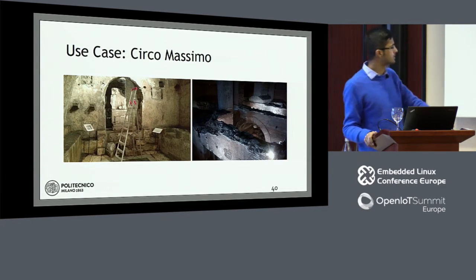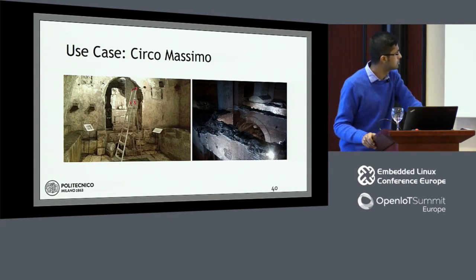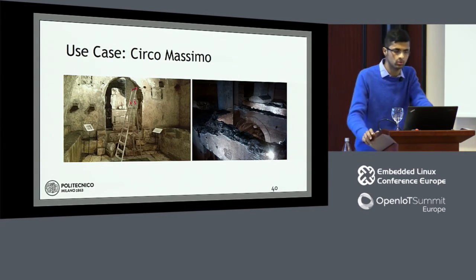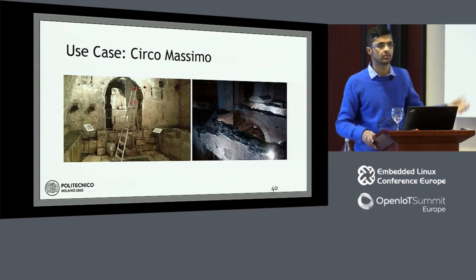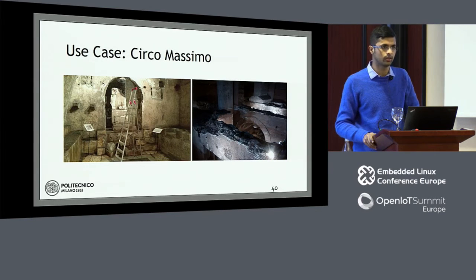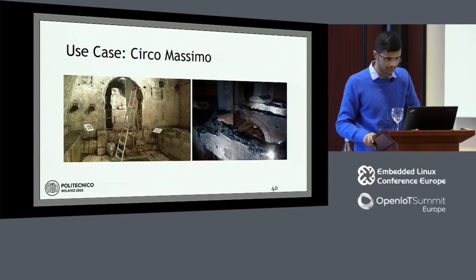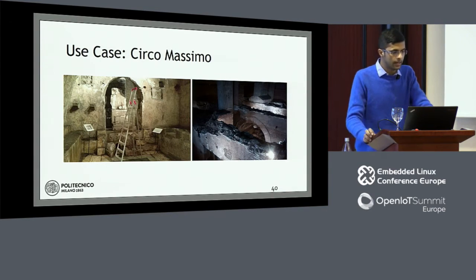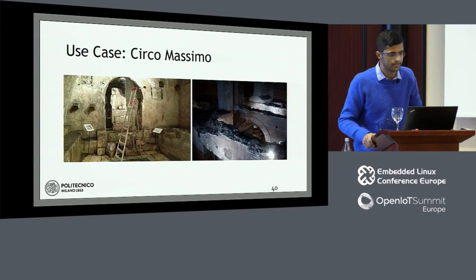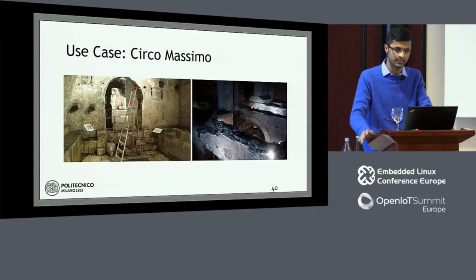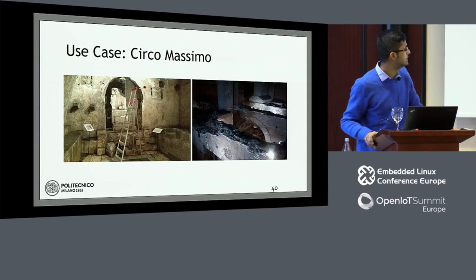Third, the place is completely unmanned through most of the week. If something goes wrong, we had no one to address the issue — we had to deploy the sensors, return to Milan, and if something went wrong make a trip from Milan to Rome just to fix a device. Finally, battery was a major consideration: the devices ran on battery and we planned to only go there when the battery ran out to replace them.